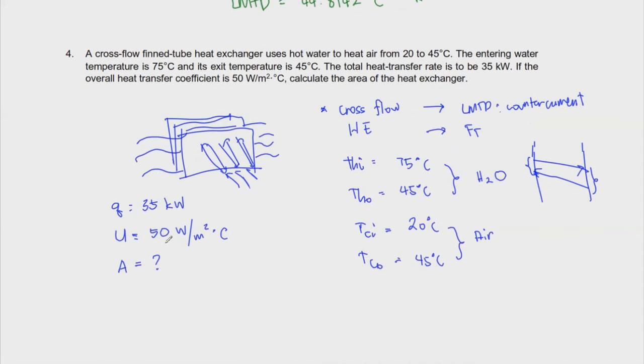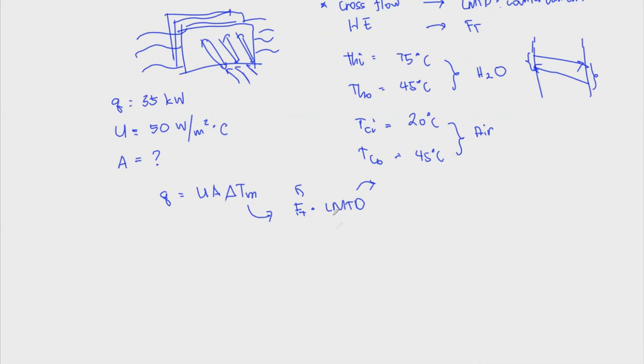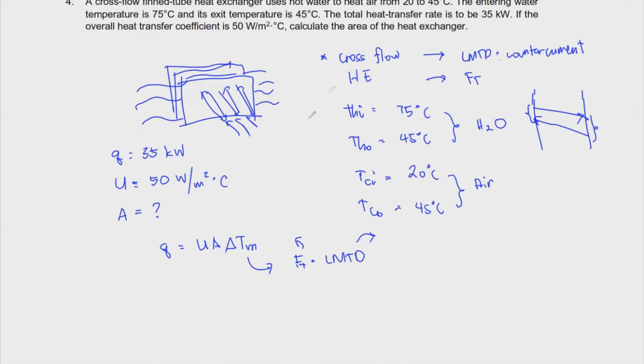Same concept as before. Our formula here would be Q = UA × ΔTm, where the mean temperature difference is the product of our correction factor Ft and the log mean temperature difference using counter-current. Ft is the correction factor obtained from Perry's Handbook. Let's check on our LMTD first. Since Q is given as well as U, if we're able to find ΔTm, we can solve for A right away.